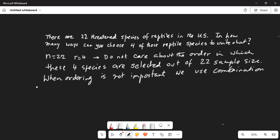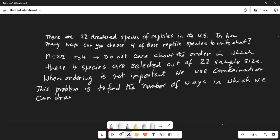So this problem is to find the number of ways in which we can draw four species out of 22 threatened species